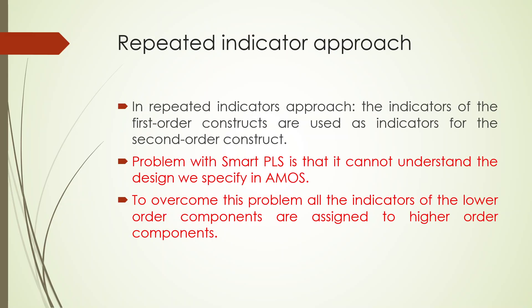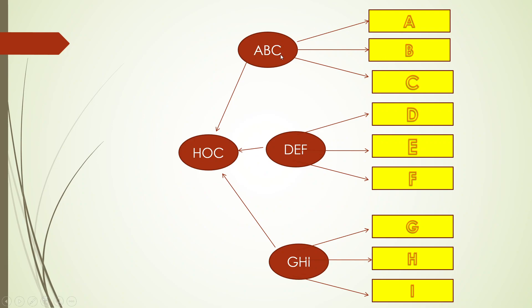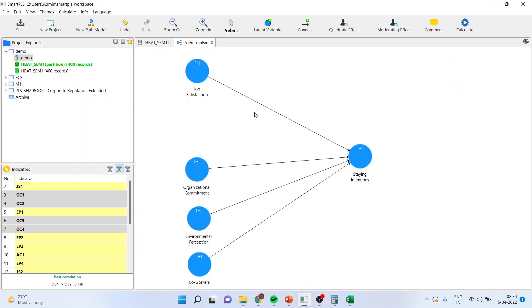In the repeated indicators approach, the indicators of first-order constructs are used as indicators for the second-order construct. For example, construct ABC is represented by measured variables A, B, C; DEF by D, E, F; and GHI by G, H, I. All of these connect to the higher-order construct. In SmartPLS, if we introduce job satisfaction and organizational commitment creating a higher-order construct, let's see what problem arises.